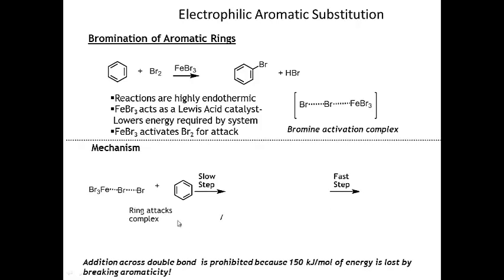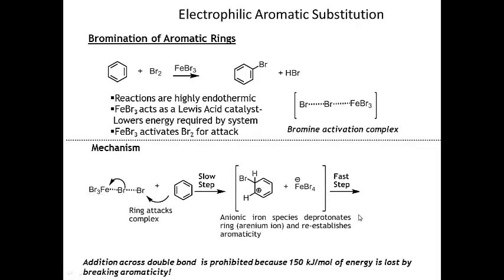In the mechanism, the first step is activation of bromine by iron(III) bromide. Once this complex is formed, the ring attacks the complex - the double bond in the ring attacks bromine, breaking the bromine-bromine bond. Over here you generate what's called an arenium ion intermediate: notice the positive charge is here and the bromine has added to this carbon. This is the slow step because you lose about 150 kJ/mol of energy by breaking up the aromaticity.